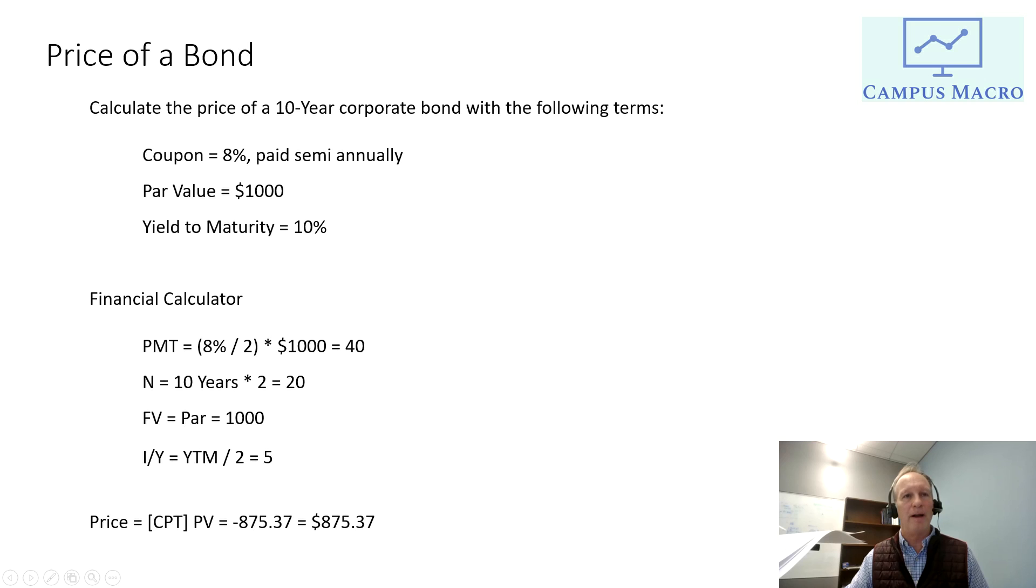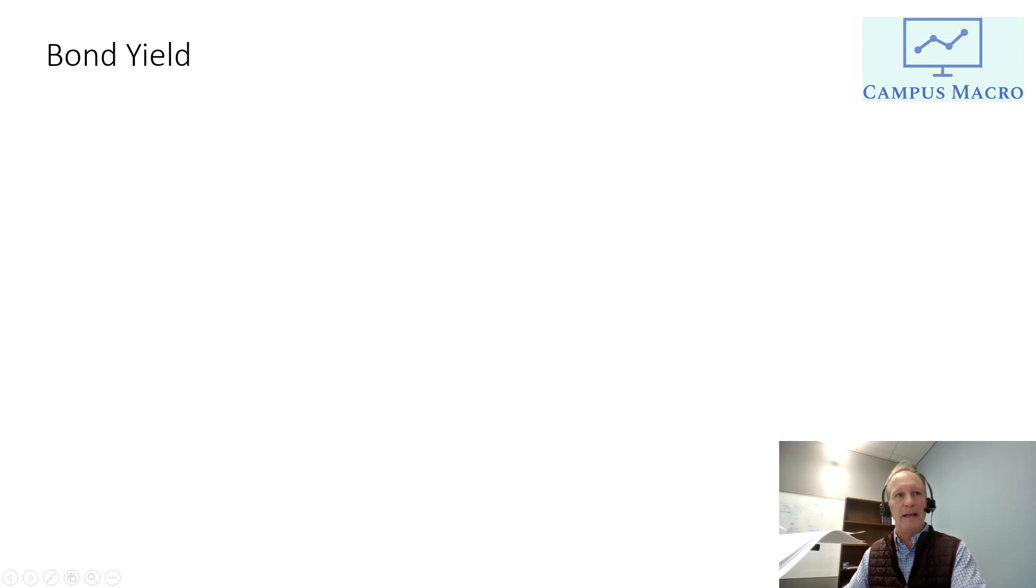This yield is above the coupon. Therefore, the bond is trading at a discount. If the yield to maturity was below the coupon, let's say it's some number like 6 or 5%, the bond would be trading at a premium.